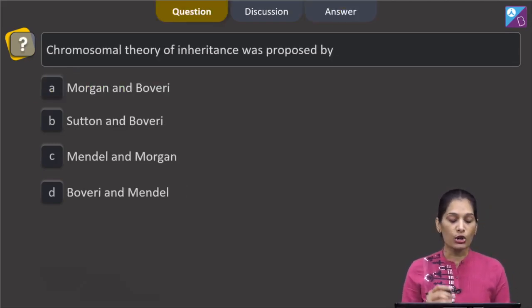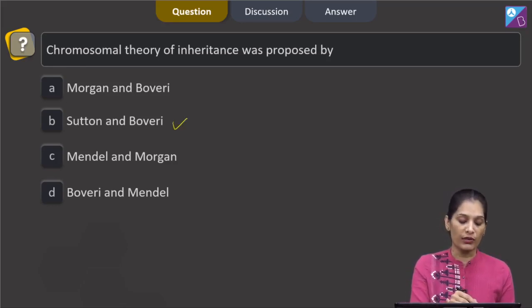This question says chromosomal theory of inheritance was proposed by Morgan and Boveri, Sutton and Boveri, Mendel and Morgan, or Boveri and Mendel. Chromosomal theory of inheritance was proposed by Sutton and Boveri.